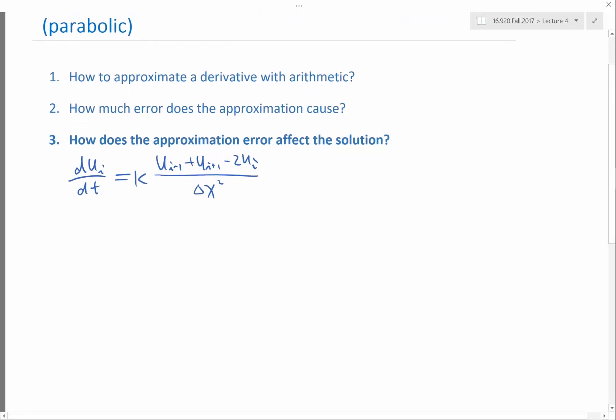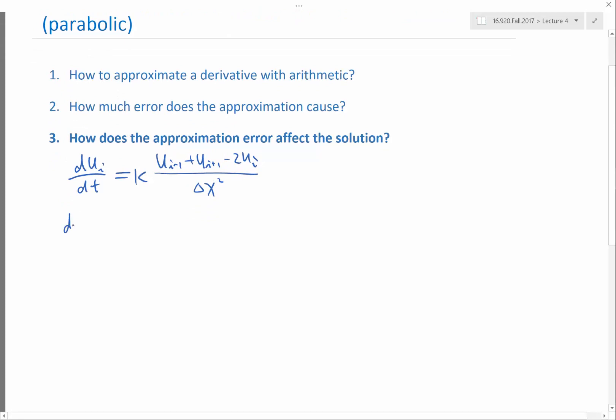And we have derived the error equation. Let's take these to be hats, because these are our numerical solution. So if we define the error to be the difference between the numerical solution and the true solution, the true solution is taking an analytical solution and taking the value at the grid point i.